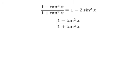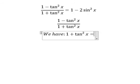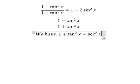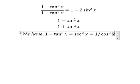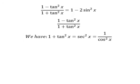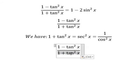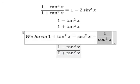So we have the formula: one plus tan squared x equals secant squared x, and this equals one over cosine squared x. Now we need to transform this one into this one.